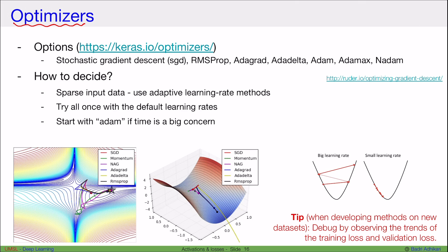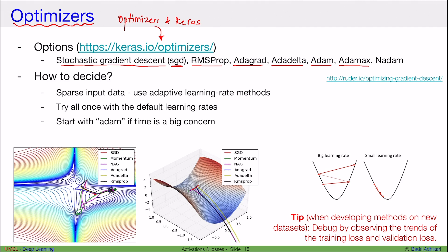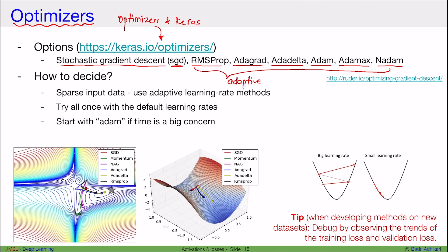Keras comes with a lot of optimizers. If you search for 'optimizers in Keras' in Google, you should land on a page where Keras lists all available optimizers. Some of these are: Stochastic Gradient Descent (SGD), RMSProp, Adagrad, Adadelta, Adam, AdamX, and Adamax. All of these, except for SGD, are adaptive optimizers.